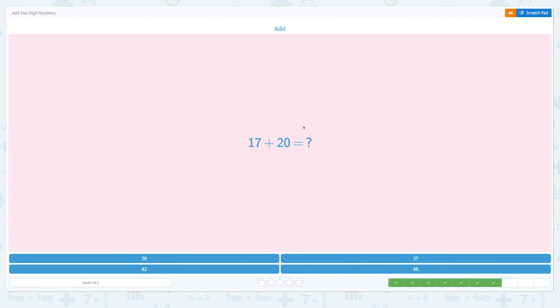Add 17 plus 20. Let's add the ones place. 7 plus 0 equals 7. 1 plus 2 equals 3. So the answer is 37. Great job.